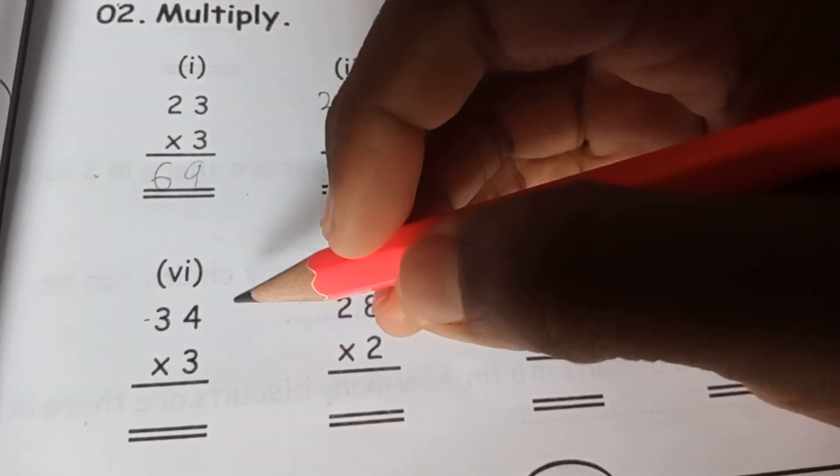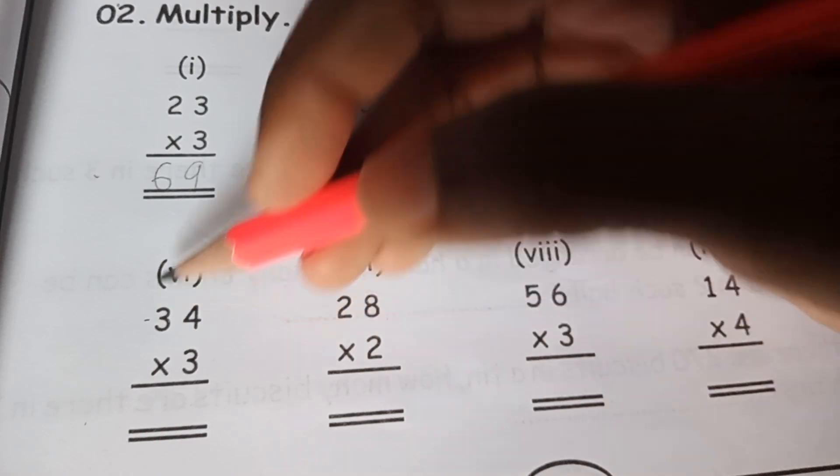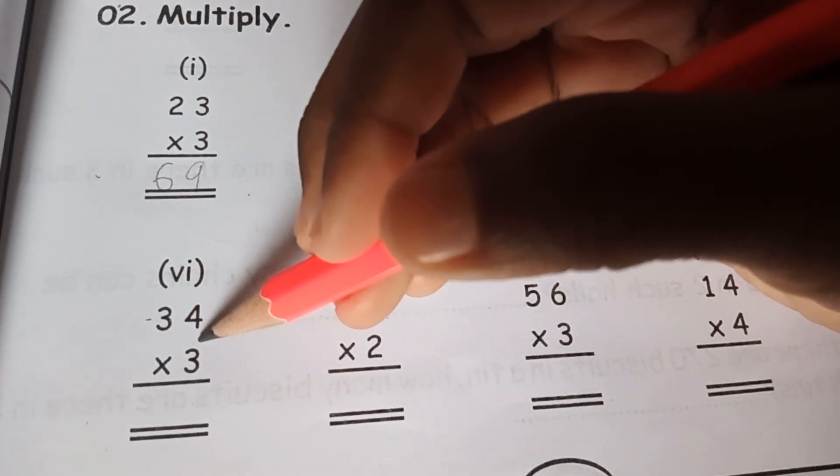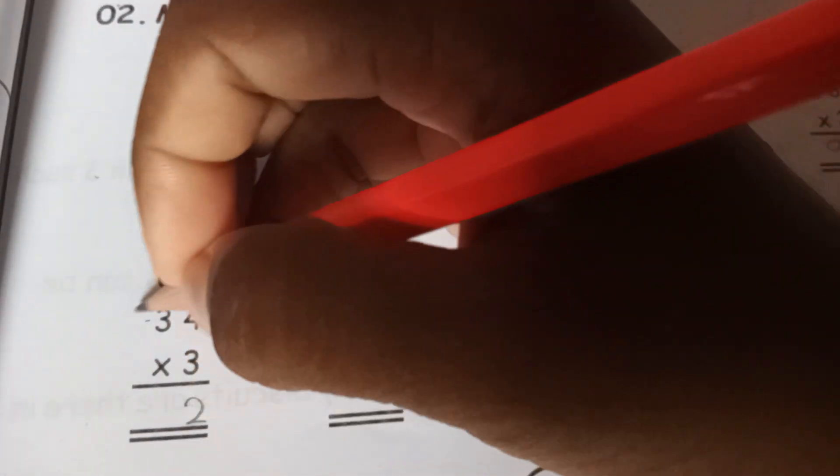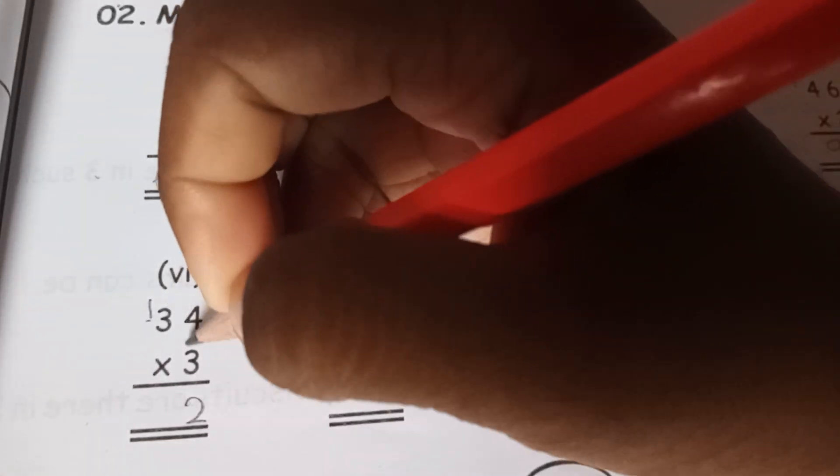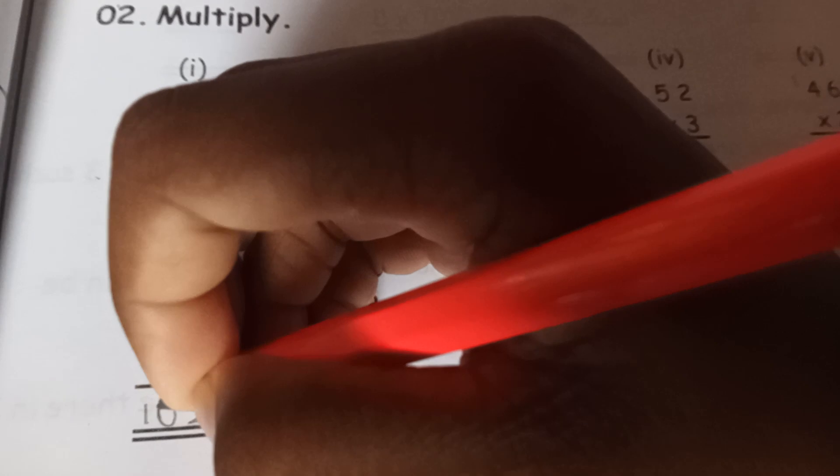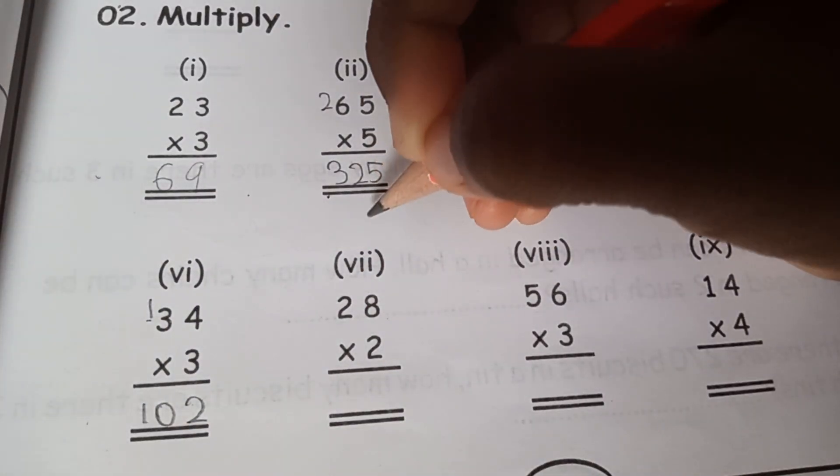First read the sum: 34 times 3. 3 times 4 is 12, 1 goes over here. 3 times 3 is 9, 9 plus 1 is 10, so the answer will be 102.